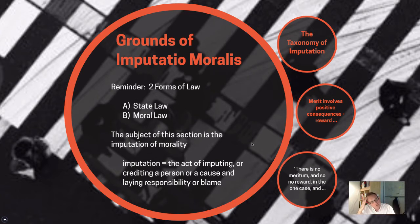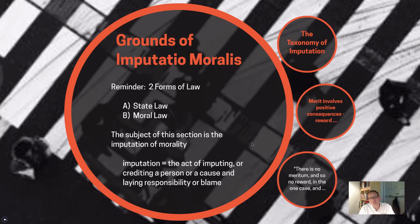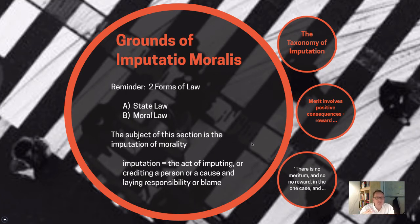In this section, Kant is looking at the grounds for the imputation of morality. What is imputation? To impute is to credit a person or cause and lay the responsibility of blame. Imputation is essentially the way we assign and credit the responsibility or blame of a specific action. When we talk about moral imputation, we're talking about the ways we can credit, blame, or assign responsibility morally to agents who act.